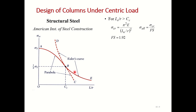The Euler curve is the traditional theoretical curve. The steel curve is fit through experimental data and divides into two zones. The point B where the experimental curve touches the Euler curve corresponds to sigma critical equal to one-half sigma_y, and Cc is the slenderness ratio at that point. For L/r greater than Cc we use the Euler formula (long column), and for L/r less than Cc we use the parabolic empirical equation (short column).